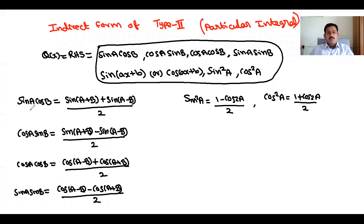We are going to use: sinA cosB = [sin(A+B) + sin(A−B)] / 2. Similarly, cosA sinB = [sin(A+B) − sin(A−B)] / 2.